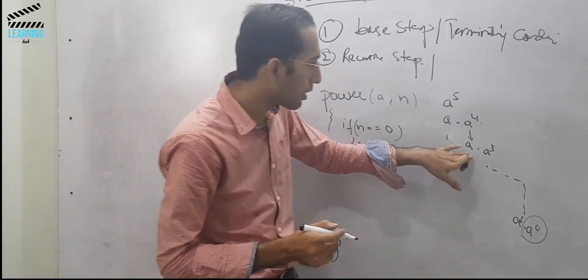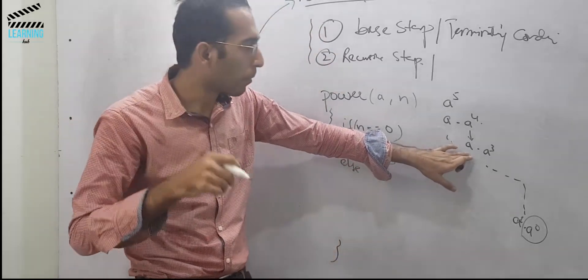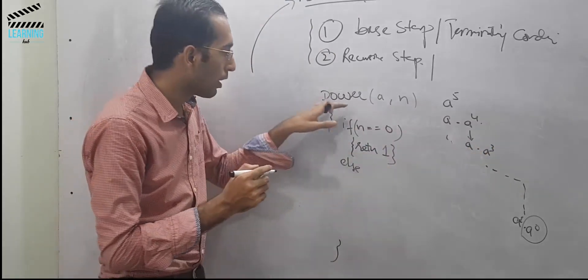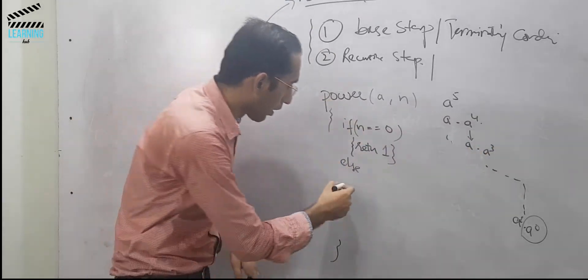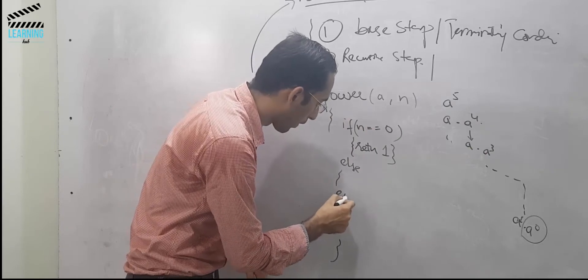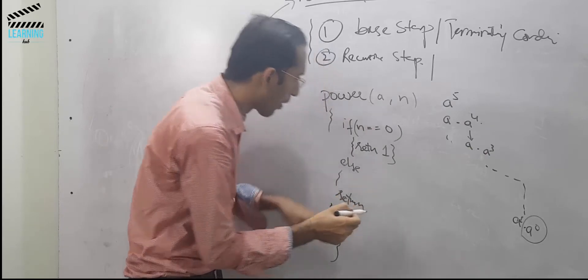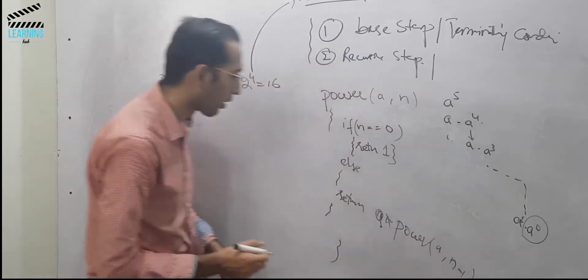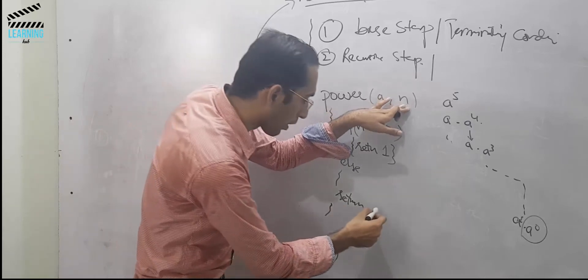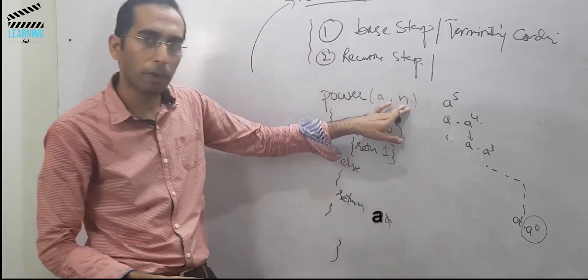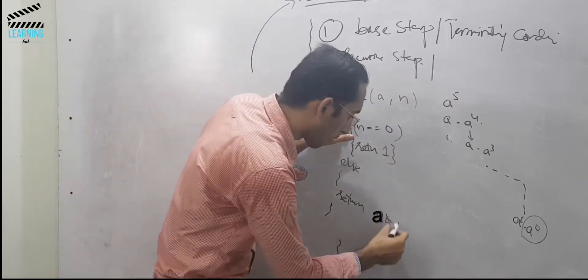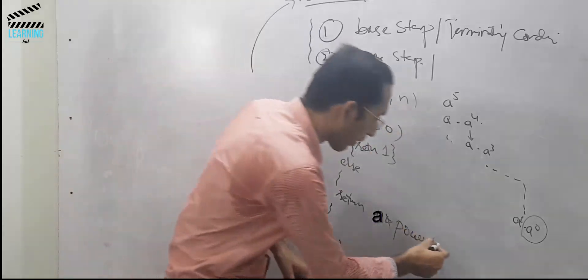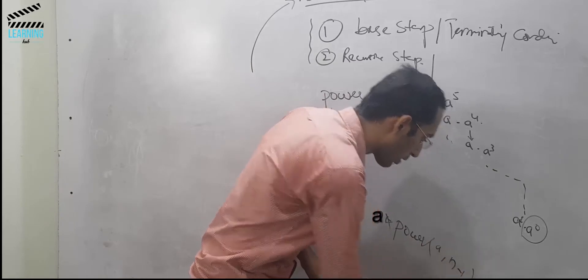else same element multiply with same function with one less element. Return a into power a and n minus 1, same element multiply by same function with one less input, a into n minus 1.